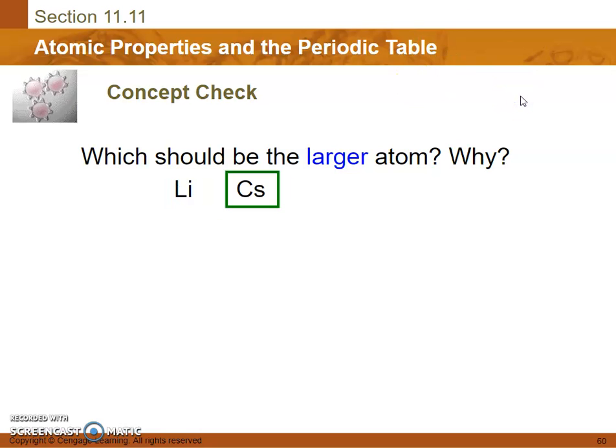Which should be the larger atom? Well, cesium, because it has much more protons, much more neutrons, much more electrons, and it is further down the periodic table than lithium.